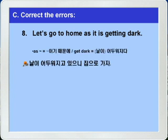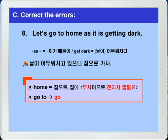8번, as it gets dark, let's go to home. 날이 어두워지고 있으니 집으로 가자는 말이 되겠습니다. 이 문제의 핵심은 home이라는 단어에 있습니다. home은 집으로, 집에서 이런 뜻의 부사죠. 부사는 전치사가 필요 없으니까, 정답은 go to에서 to를 빼고 그냥 go home으로 쓰면 되는 것입니다.